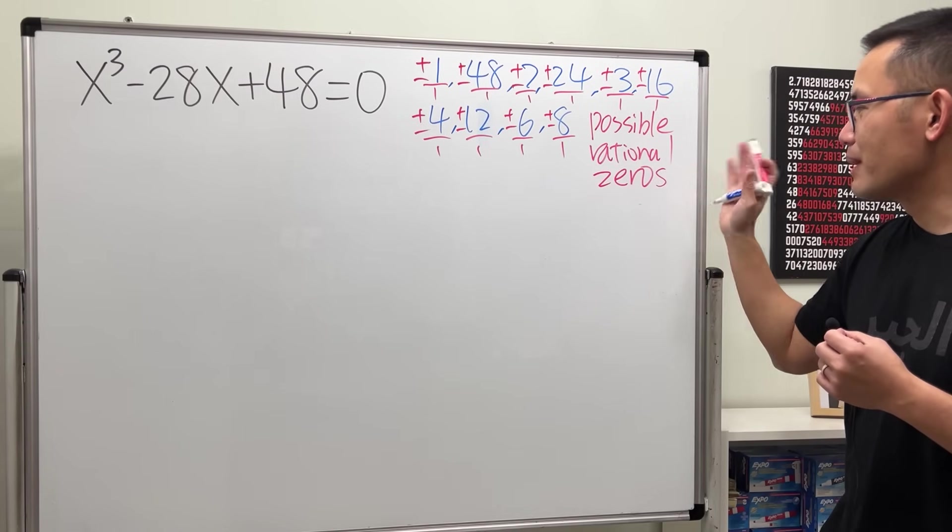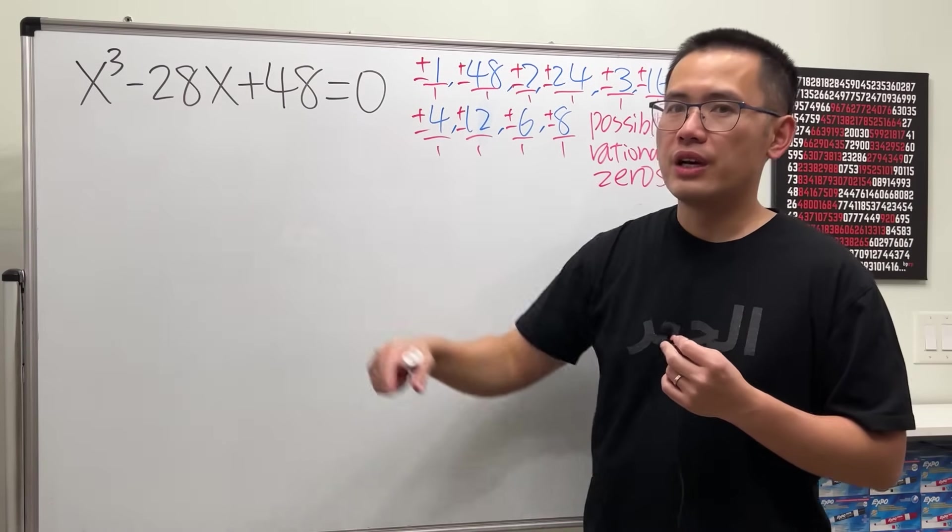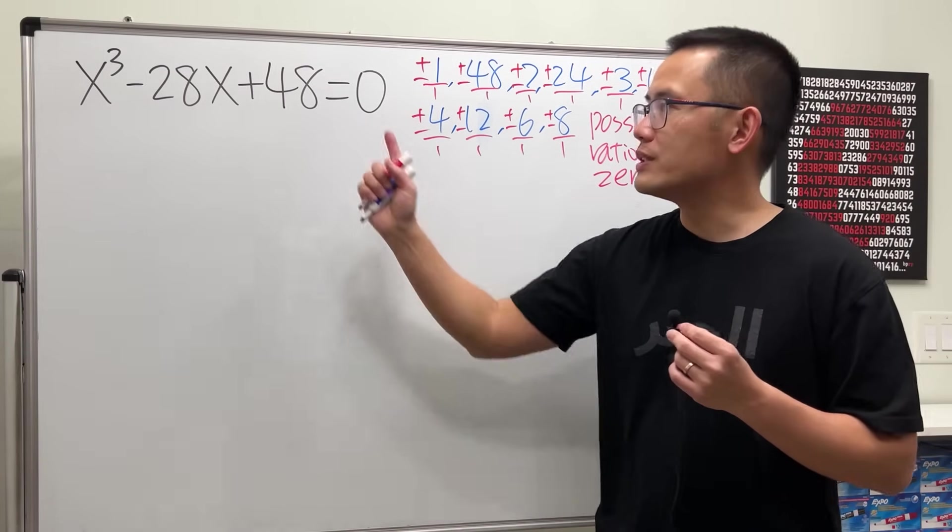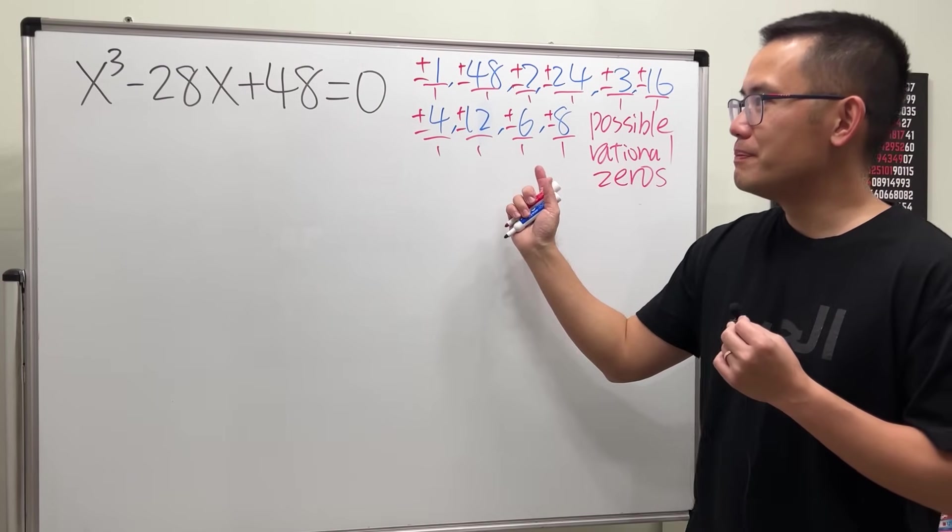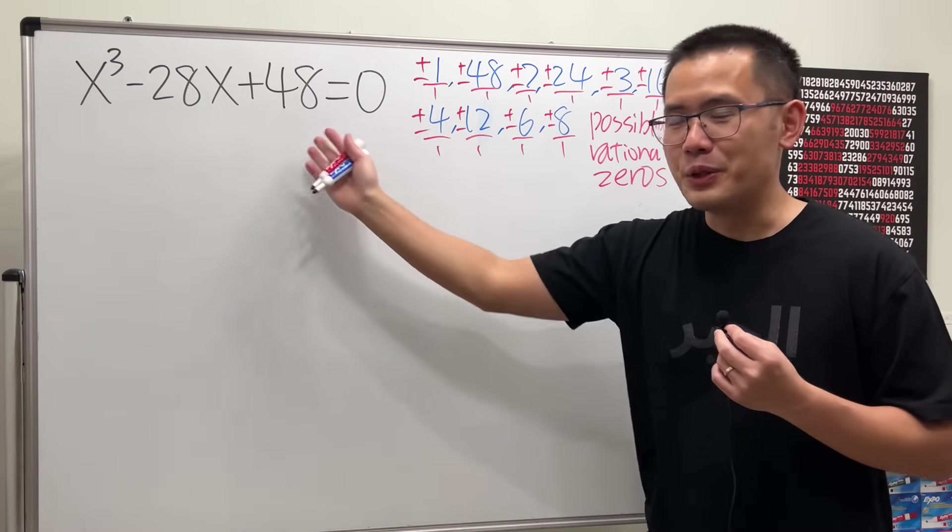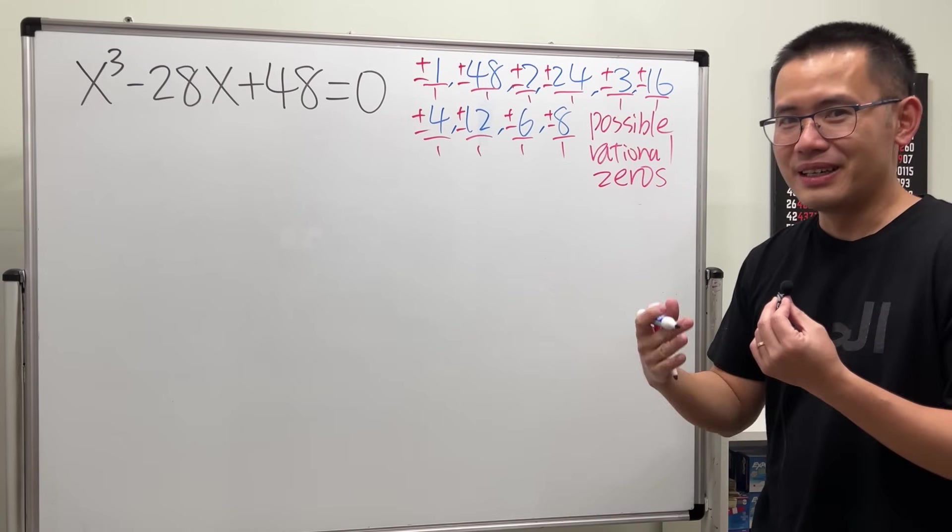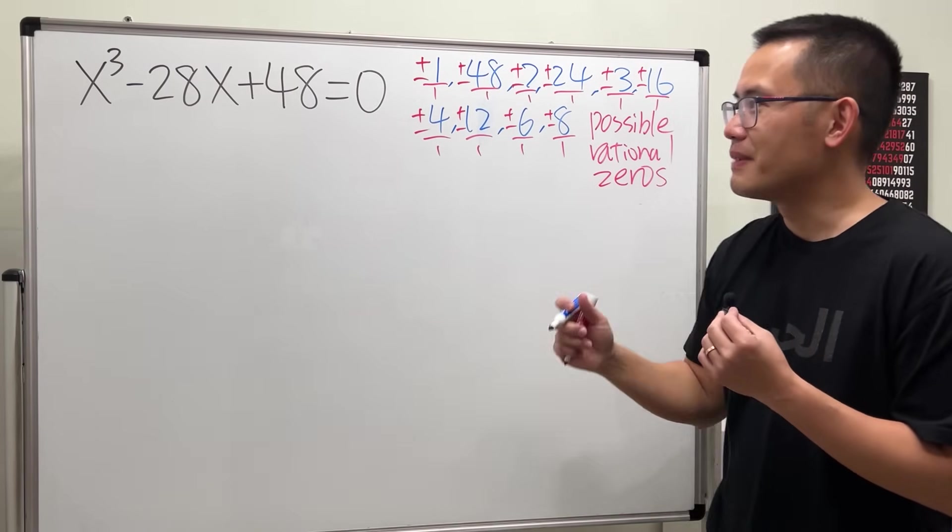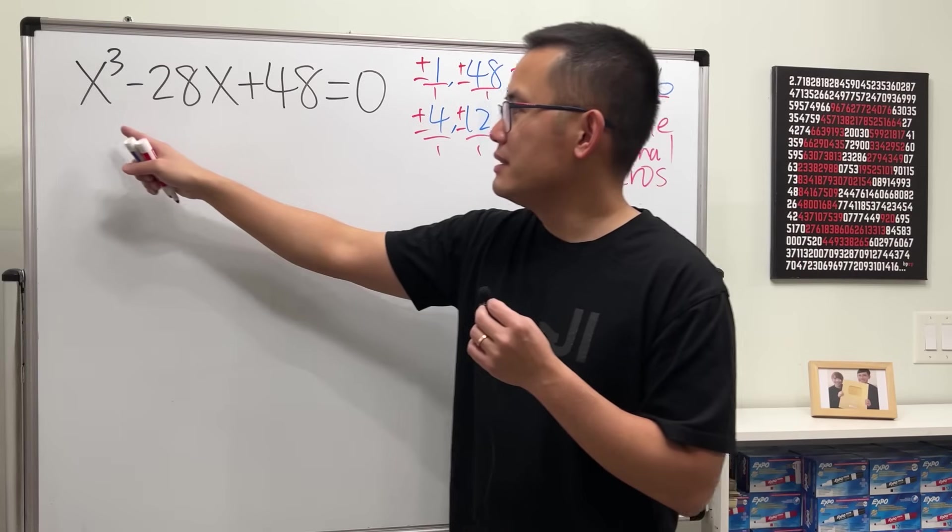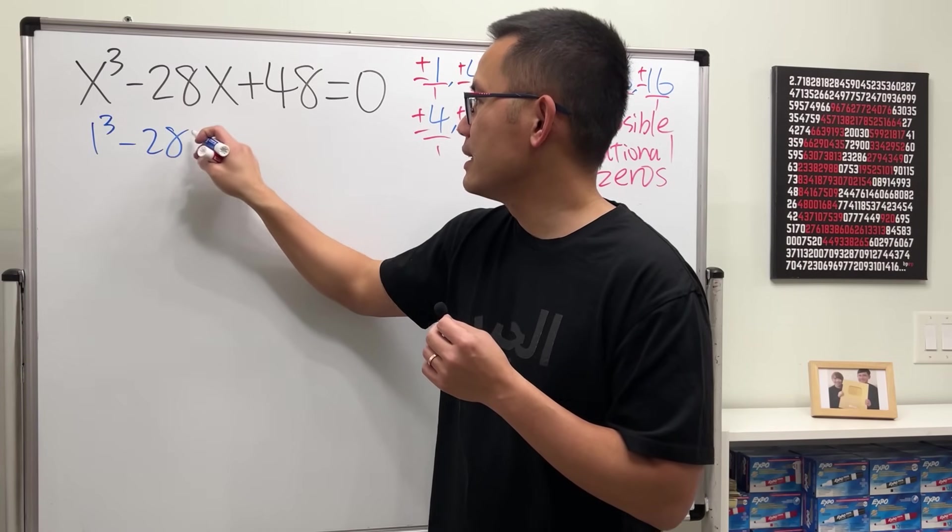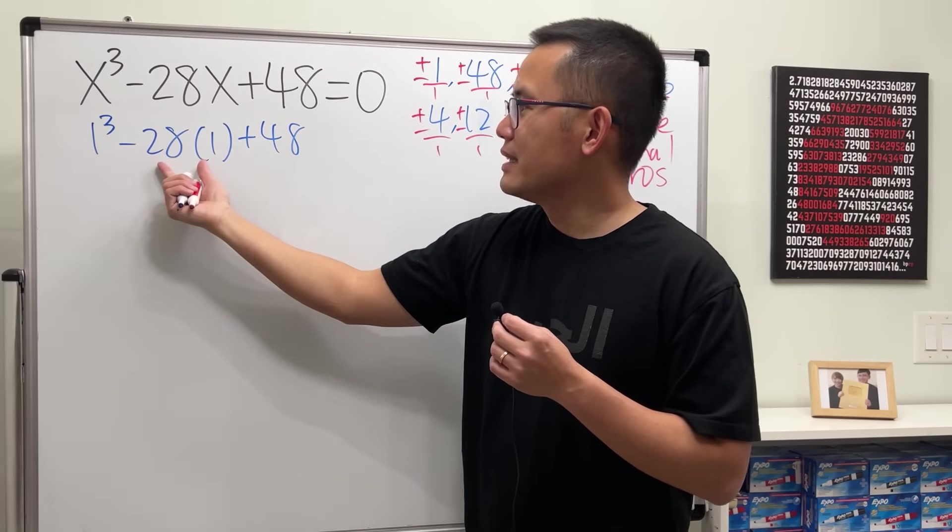These are the numbers that we should plug into the equation and check if we end up with zero or not. If we don't have anything from here that works, then this equation is not solvable with the rational zero theorem. If you plug in one, just pick the easy number one, right? So one cubed minus 28 times one plus 48, well that's negative 27 plus 48, it's not going to be zero.